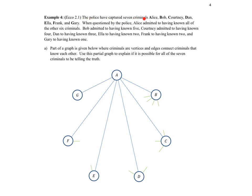This problem is found in section 2.1 of The Puzzling Adventures of Dr. Echo. The police have captured seven criminals, conveniently named with the first seven letters of the alphabet: Alice, Bob, Courtney, Dan, Ella, Frank, and Gary. When questioned by the police, Alice admitted to knowing all other six criminals. Bob said I know five. Courtney said I know four of them. Dan said I know three. Ella said I know two. Frank also says two. And finally, Gary says I know one of these other criminals.